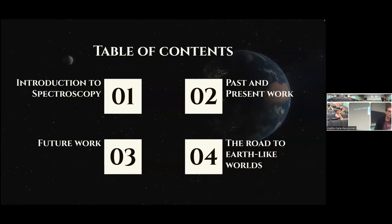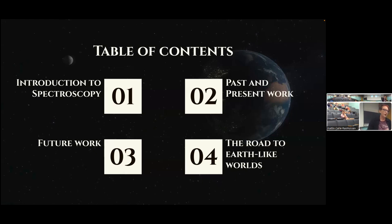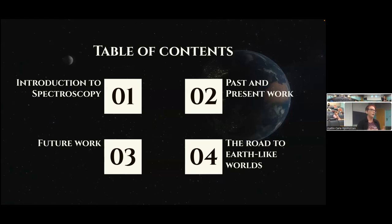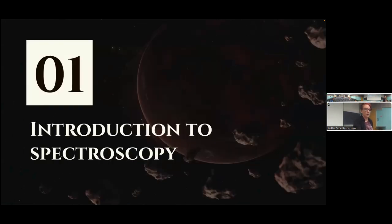This talk is going to have four parts. First, a really broad introduction to spectroscopy for everyone who's not fully familiar with the subject. Then I'll move into a brief section on what I've been up to for the last seven years. Then I'll talk about future work, and finally I'll speculate on what the road to Earth-like planets — Earth-mass planets around solar-type stars — is going to look like. So let's have a nice introduction to spectroscopy.